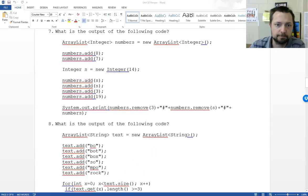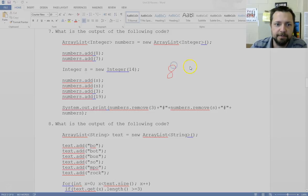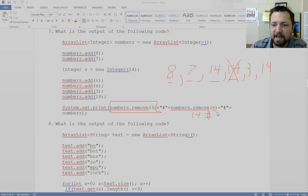Question 7. Numbers dot add 8, add 7, add integer 14, add 3, add 19. Numbers dot remove whatever is at position 3. 0, 1, 2, 3. That 14 is going to go away. So part of our output is 14. Then we get a pound. Numbers dot remove 3. It looks for the value 3. It finds it at position 2, removes it, and it will tell us true. We were successful in our remove. And then we get a pound. And we have to print off all the numbers in the list, which would be 8, 7, 3, 19.